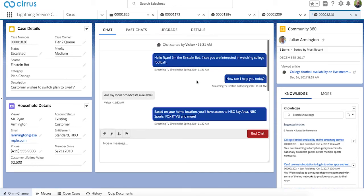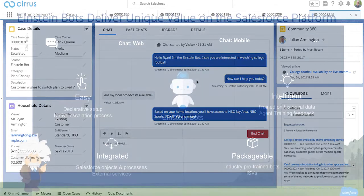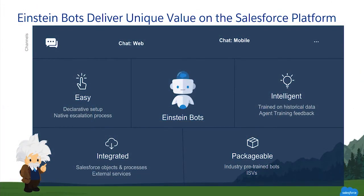Einstein Bots is natively integrated with Salesforce, so it easily connects to your business processes to get a complete view of your customers. It can also learn from every customer interaction and even feedback from your agents. With just a few easy clicks, you can now increase your case deflection, reduce your handle time, and improve your customer and agent satisfaction.